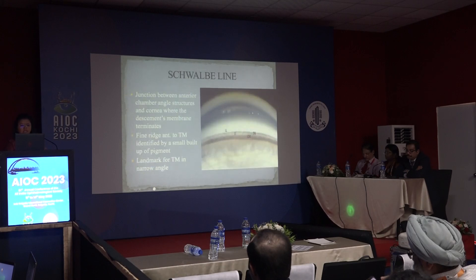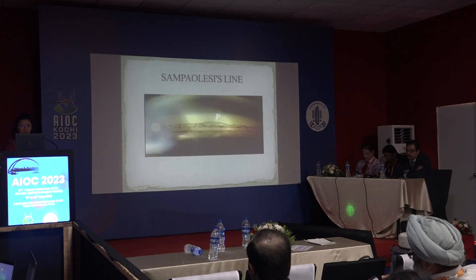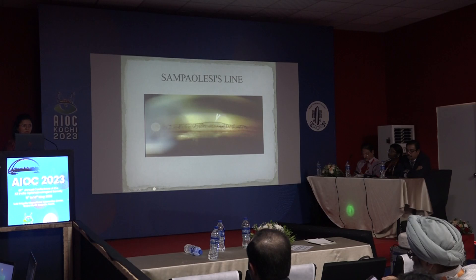Lastly, the Schwalbe's line is the junction between the anterior chamber angle structures and cornea, where Descemet's membrane terminates. It is also a landmark for the trabecular meshwork in narrower angles. A heavily pigmented angle may show pigmentation that is much anterior to the Schwalbe's line.